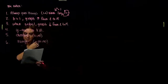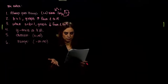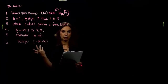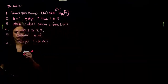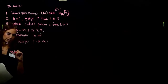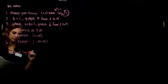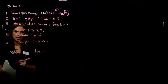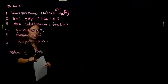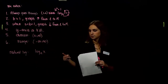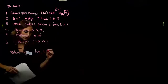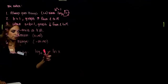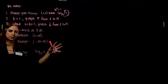The special base e has an inverse called the natural logarithm. It's a special logarithm with base e, written as ln(x) — that notation is reserved for log base e. On a calculator, there's a dedicated ln button. The natural log and the natural exponential are inverses: ln(e^x) = x and e^(ln x) = x.